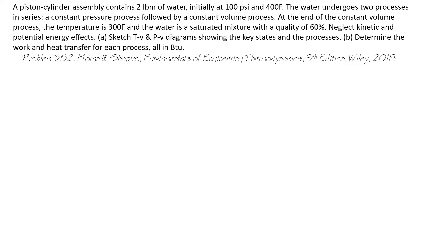A piston cylinder assembly contains two pounds mass of water, initially at 100 psi and 400 degrees Fahrenheit. The water undergoes two processes in series: a constant pressure process followed by a constant volume process. At the end of the constant volume process, the temperature is 300 degrees Fahrenheit, and the water is a saturated mixture with a quality of 60%. Neglect kinetic and potential energy effects.